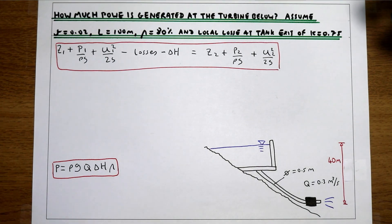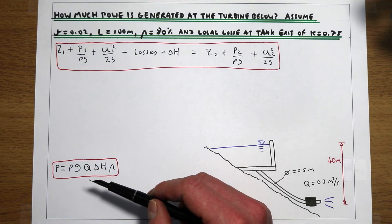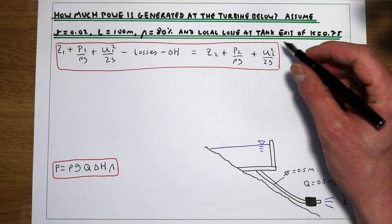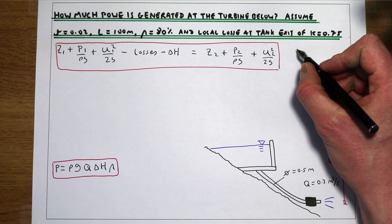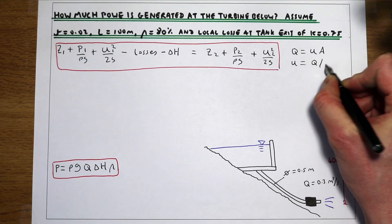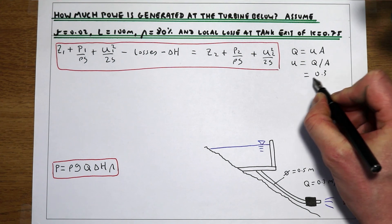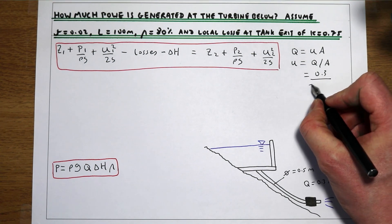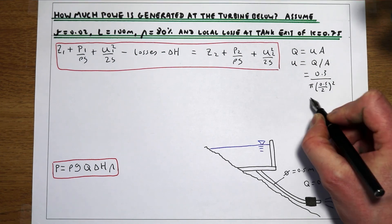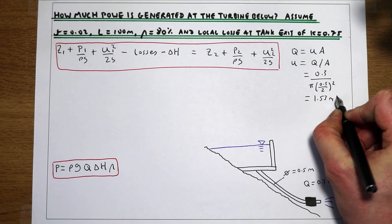We're first going to need to use Bernoulli's equation to work out how much energy the turbine has extracted from the flow. Before we look at Bernoulli's equation, it will be useful to work out what the velocity in the system is. We know that Q equals U times A, so our velocity is going to be Q over A. We're told the flow rate is 0.3 metres cubed per second, and given the pipe diameter, the area will be pi r squared — pi times the diameter over 2, squared — which gives us a velocity of 1.53 metres per second.